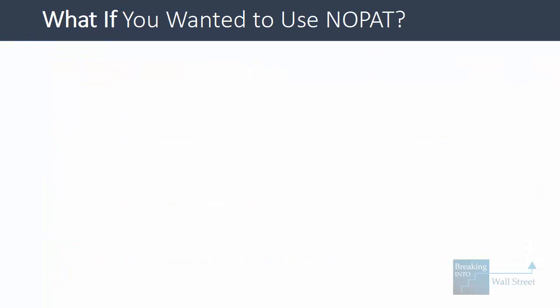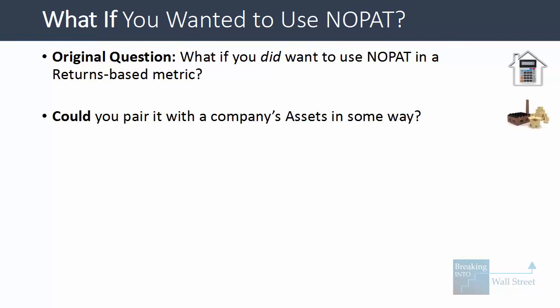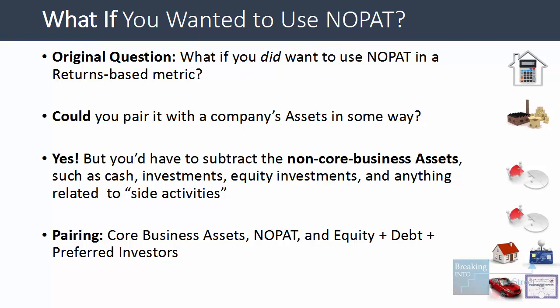But what if you did want to use NOPAT in a returns-based metric based on the company's assets rather than return on invested capital? Would it be possible to pair NOPAT with a company's assets? The answer is yes — but to do so, you'd have to subtract the company's non-core business assets like cash, investments, equity investments, associate companies, and anything related to side activities. The pairing is: core business assets go with NOPAT, go with equity plus debt plus preferred investors, and all pair with enterprise value.